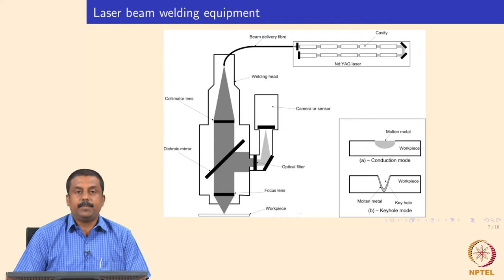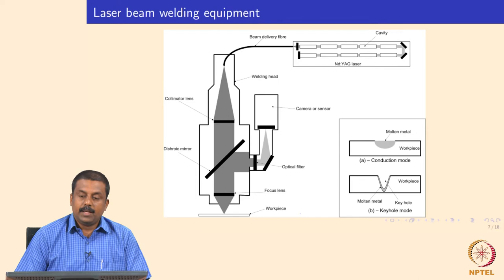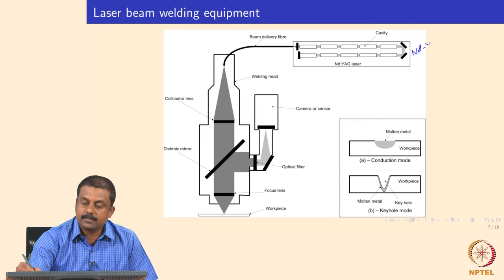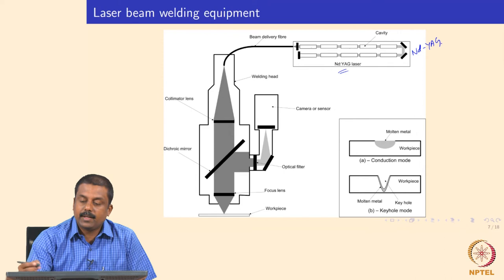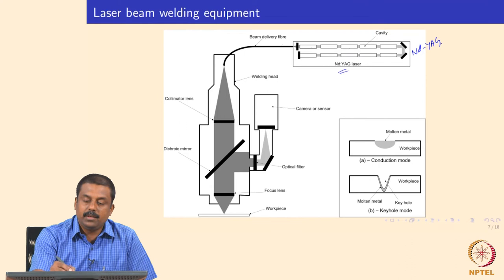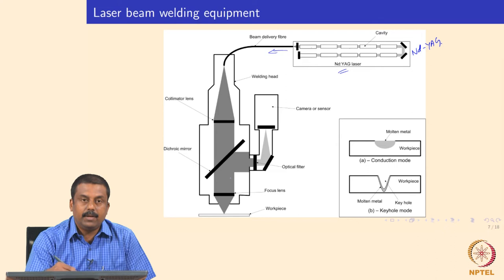If we have a laser source, obviously we need to make a welding setup. The following shows a typical welding setup used in one of my earlier laboratories in the Netherlands, where we had an Nd:YAG laser. The Nd:YAG laser medium is schematically shown, with about 10 gain mediums made of Nd:YAG material. The generated laser is sent via a beam delivery cable towards a welding station.